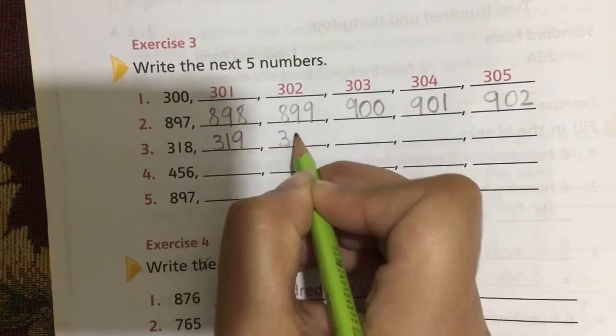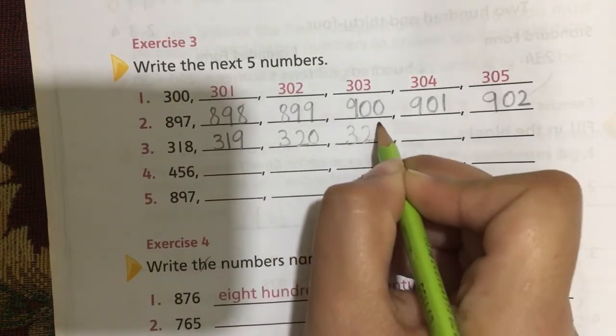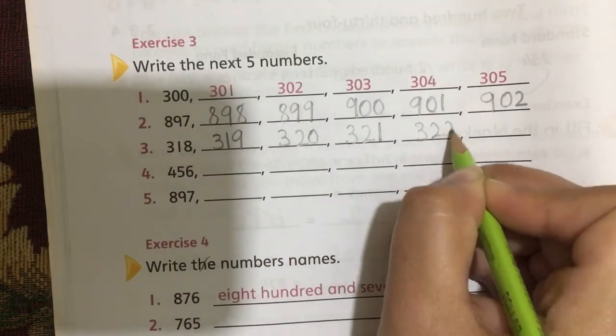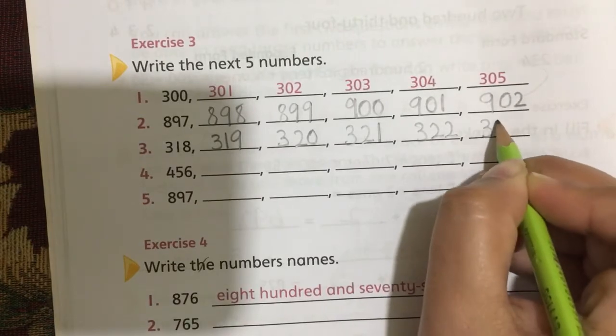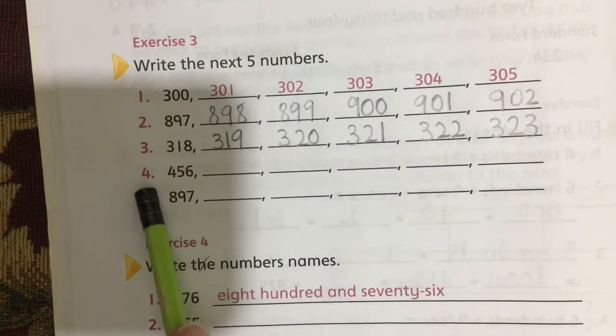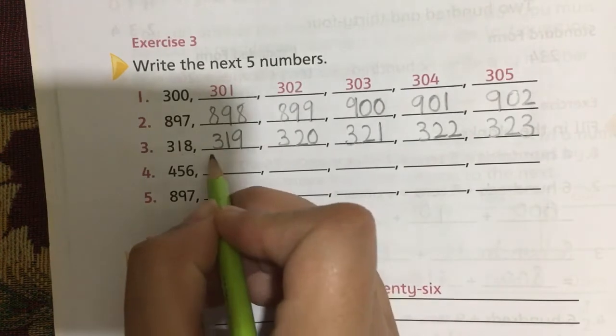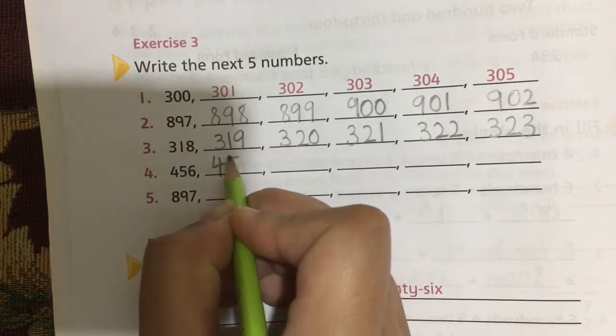320, 321, 322, 323. Question number four is 456, 457.